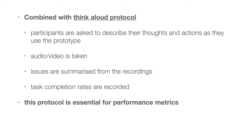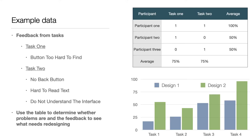Understanding task success is absolutely essential to get performance because if you can't do a task, there is no performance. Here's a really simple example: participant one managed to complete both tasks with no problem. Participant two did task one. Participant three did task two. So both tasks have an average success rate of about 75%. There's something happening with these tasks — you need to understand why. Look at the videos, transcripts, and thematic analysis. Maybe there's a button that's hard to find or text that's hard to read. Whatever people were talking about when they failed, that's telling us what's causing the failure.